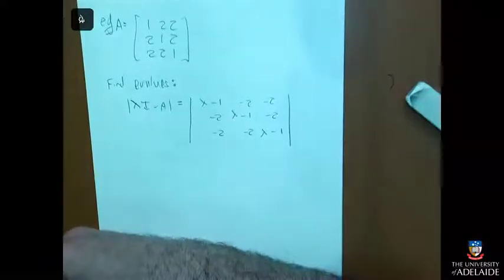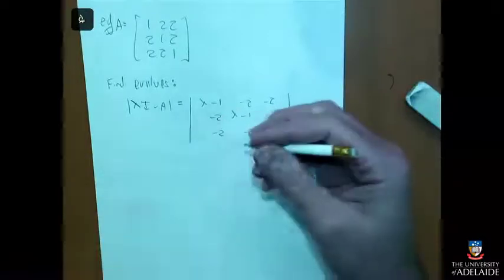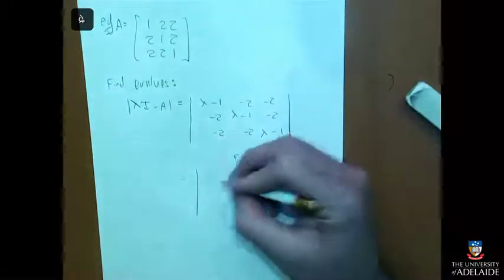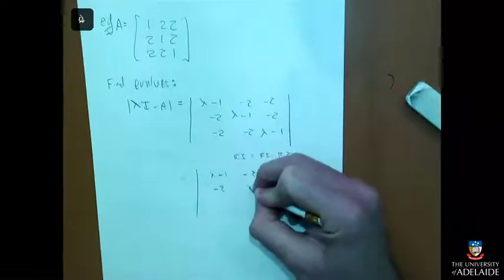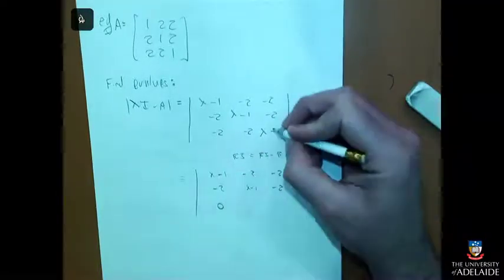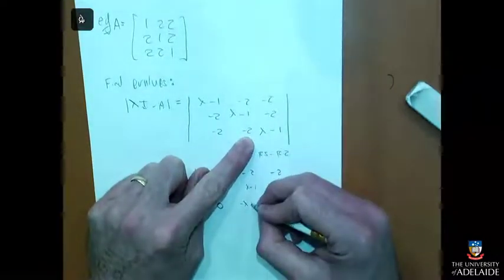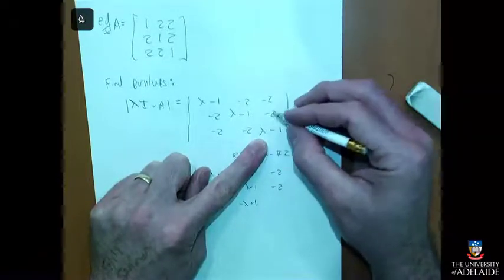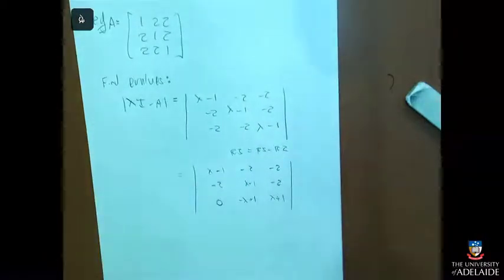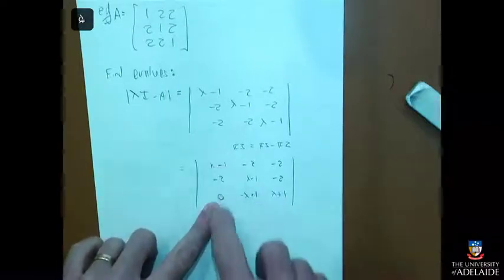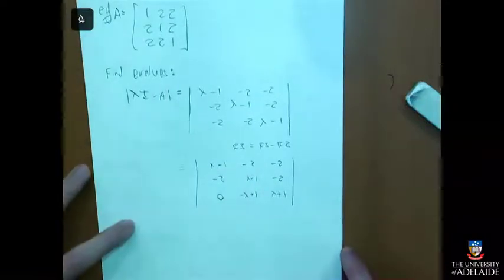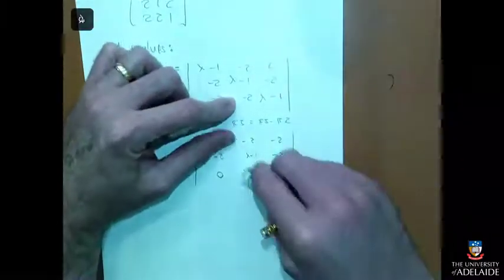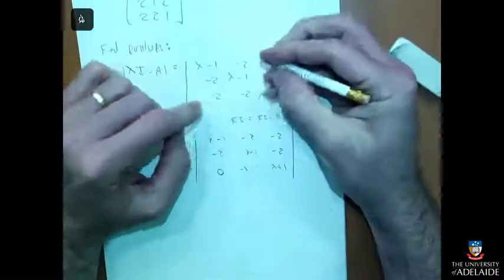Some row operations will help here. Row three is going to be row three minus row two, giving minus two, minus lambda, and minus two minus minus one which is plus one. And minus lambda minus one minus minus two. I made a zero here to have extra zeros in place to help out.